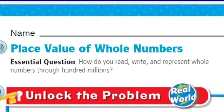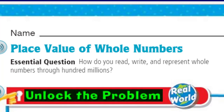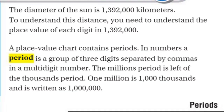But first, before we can do any of that, we have to unlock the problem. That's right, my friends, it's real world! It says the diameter of the sun is 1,392,000 kilometers. To understand this distance, you need to understand the place value of each digit in 1,392,000. A place value chart contains periods. In numbers, a period is a group of three digits separated by commas in a multi-digit number.